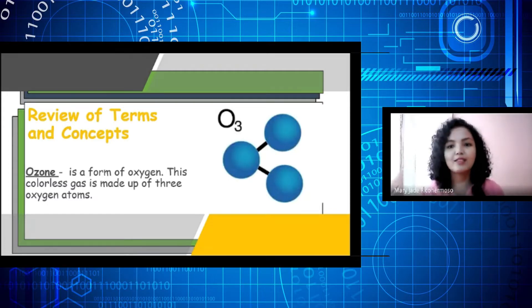Now class, those terms that you identified a while ago play an important role in the atmosphere. In fact, carbon dioxide, oxygen, and ozone are some gases that are present in our atmosphere. Let's find out more! Let's talk about the atmosphere.